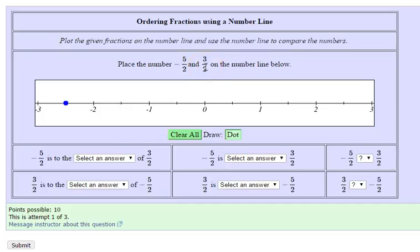For our second number, 3 halves, we'll start at 0 and count to the right. 1 half, 2 halves, 3 halves.